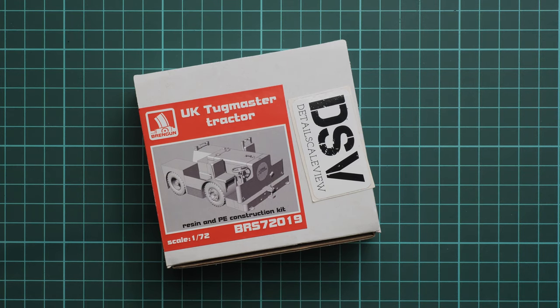Hello everyone, today we have a new video review and as you can see this time we are going to talk about a fresh release from BrenGun. This is a resin set made in 1/72nd scale and it copies UK Tag Master tractor, which might be handy for an interesting diorama with your aircraft in 1/72nd scale.